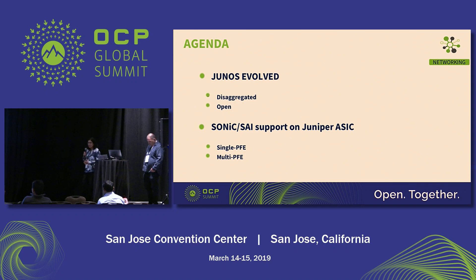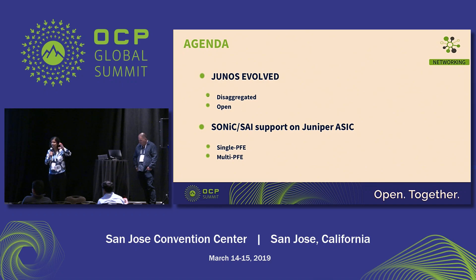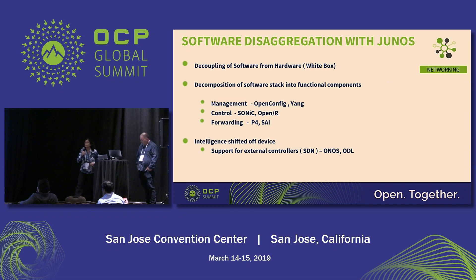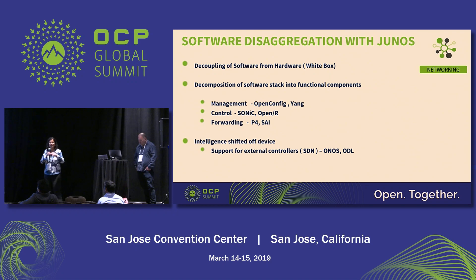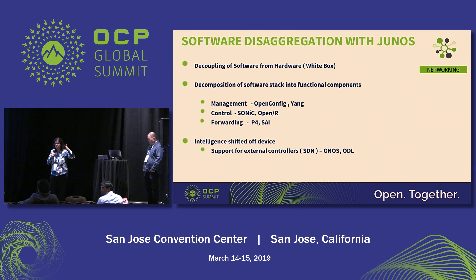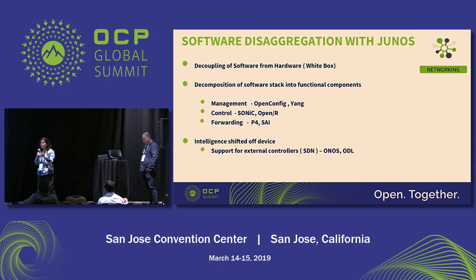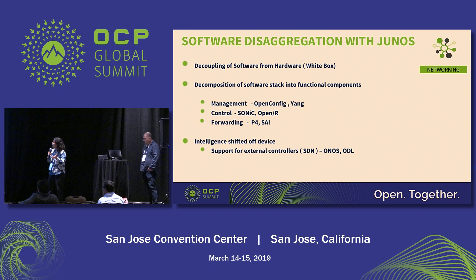We have been innovating our network operating system. First, we have disaggregated our software stack and made it open. When we talk about disaggregation, the first thing that comes to mind is the white box solution — separating software from hardware. This allows customers to go with best-of-breed software or components, and to upgrade hardware while leveraging the software.